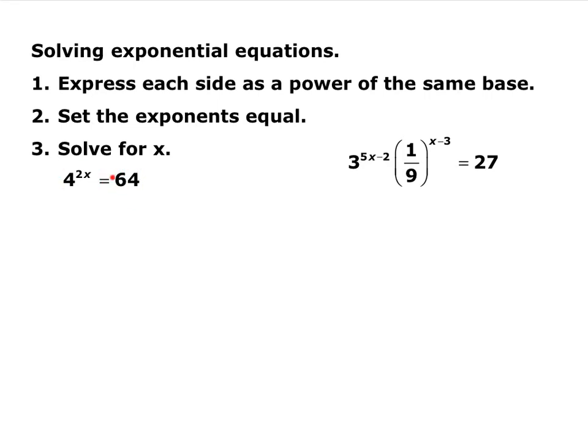We want to be able to write 64 as a base 4. 64 is the same thing as 4 cubed, so now I have the same base. If you have the same base raised to an exponent and they're equal to each other, that means that the exponents have to be equal. You know these numbers are equal, the bases are already equal, so the only thing left is that the exponents have to be equal. So 2x has to equal 3. If you divide both sides by 2, we know that x equals 3 halves.